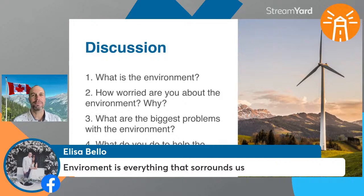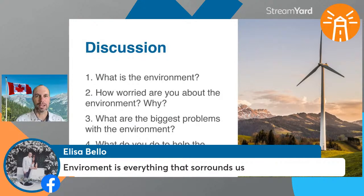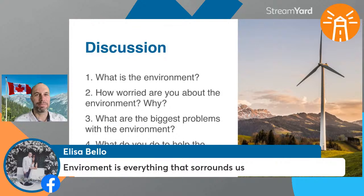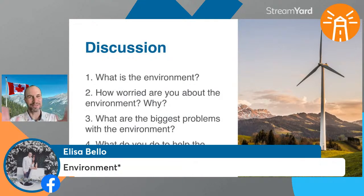Alyssa says 'environment is everything that surrounds us' — you're exactly right, it's the world around us. It could be mountains, forest, rivers, ocean, but could also mean the city environment. Great answer. Just one thing: check your spelling of 'environment' because it does have an N — we say 'environment' but the N is there right before the M. And 'surrounds' should be S-U-R-R-O-U-N-D-S. Alyssa corrected herself — I like it when students correct themselves and don't need me to do it.